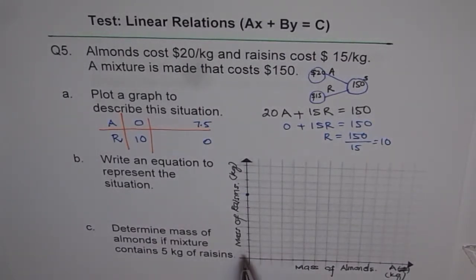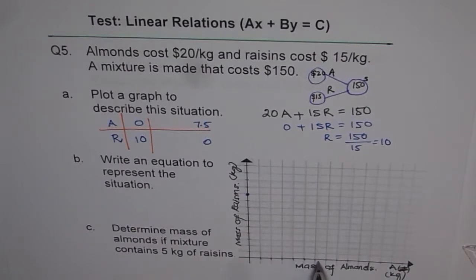So we get here, if R is 0, then A is 7.5. 1, 2, 3, 4, 5, 6, 7.5. We get this point.